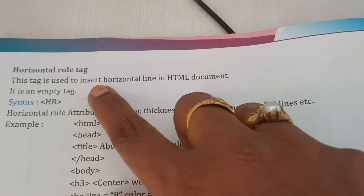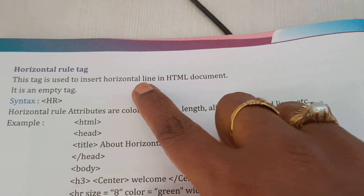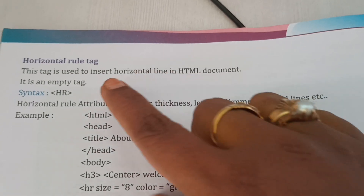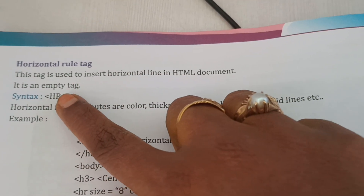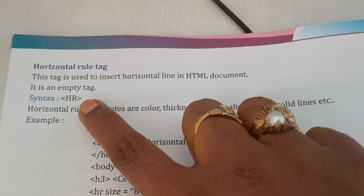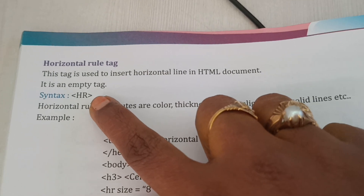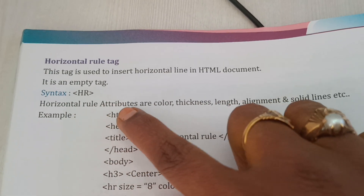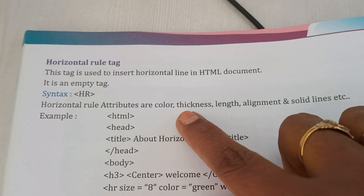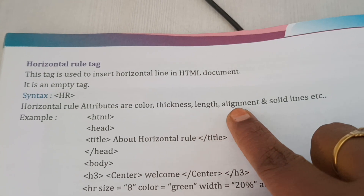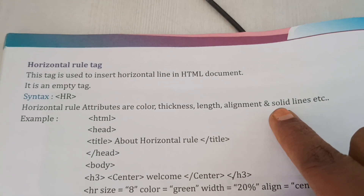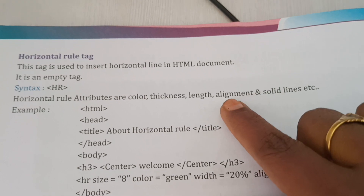The HR tag is used to insert a horizontal line in an HTML document. It is an empty tag. Syntax HR — horizontal rule attributes are Color, Thickness, Length, Alignments, and Solid lines, etc.